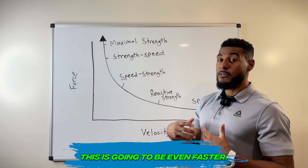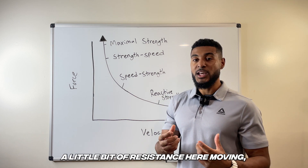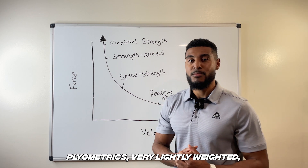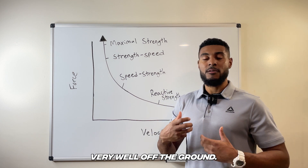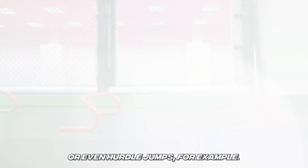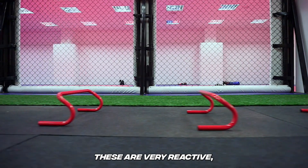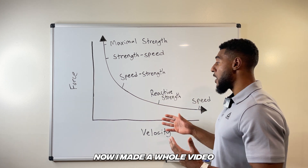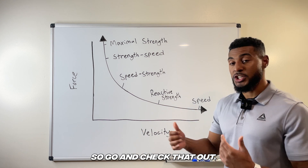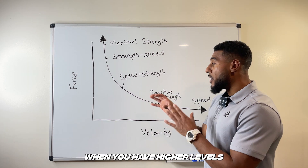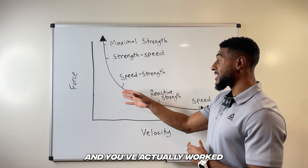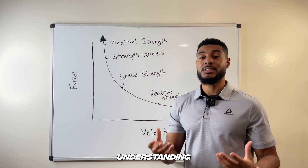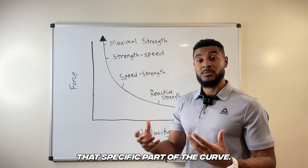Next up, we have reactive strength, which is going to be even faster. There's still maybe a little bit of resistance you're moving, but it's so small because you're going to be able to put a lot of velocity on it — things like lightly weighted plyometrics. You're still able to bounce very well off the ground and put a lot of speed there, or even hurdle jumps. These are very reactive, but not as fast as sprinting, which is why they fall under reactive strength. When you have higher levels of maximal strength and have worked your power and speed-strength, you're going to be so much better off training in that specific adaptation of reactive strength.